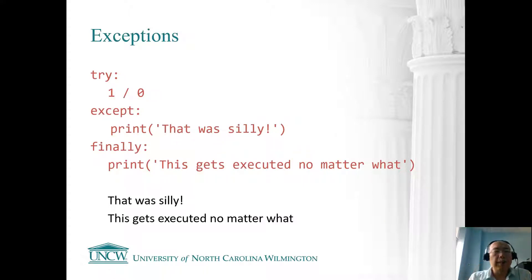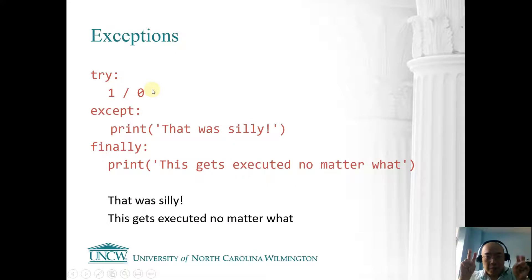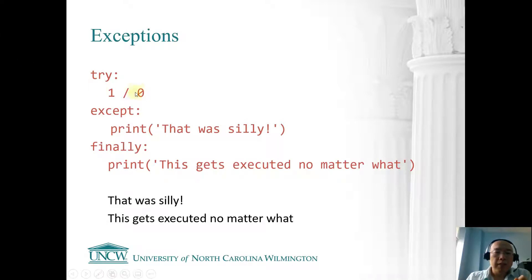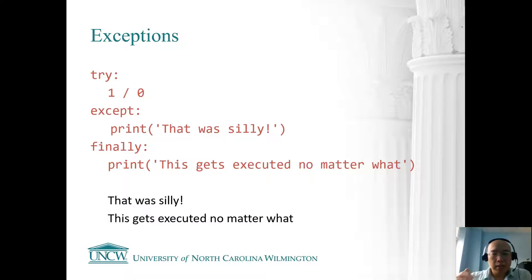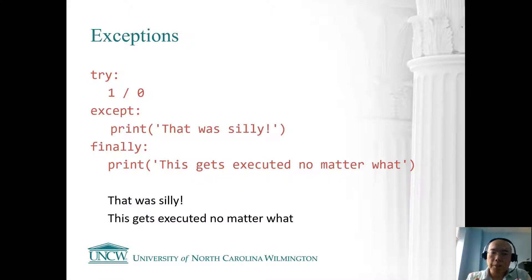The syntax for try and except is: we try some part of the code — usually we consider this the risky part — with a colon and an indented try block. After that we have an except block. If an exception occurs in the try block, we stop executing the try block and move to the except block. After the except block, if there is a finally block, that block will be executed no matter what — whether or not we finished the try block without an exception.